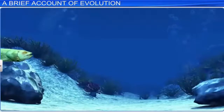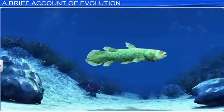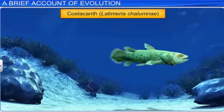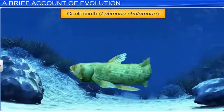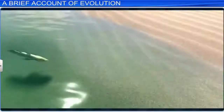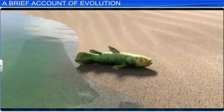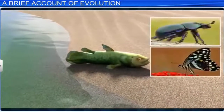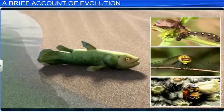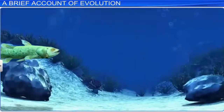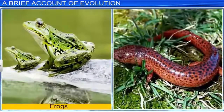Another important fish of this period were the Lobe fin fish, which later evolved as amphibians. Coelacanth is a lobe fin fish which was thought to be extinct earlier, but is now considered a living fossil. In times of water shortage, lobe fin fish probably made their way onto land and might have added insects and other arthropods to their diet. Modern day descendants of lobe fin fish are frogs and salamanders.